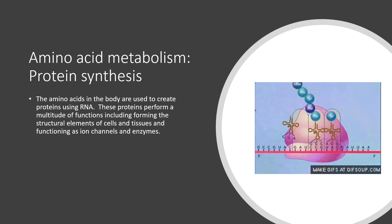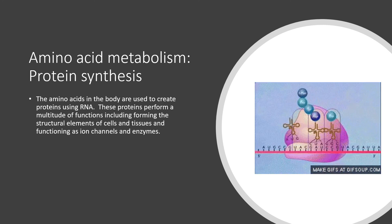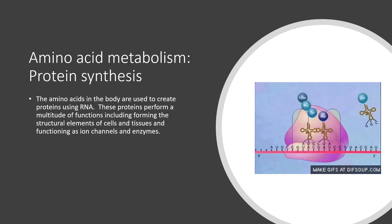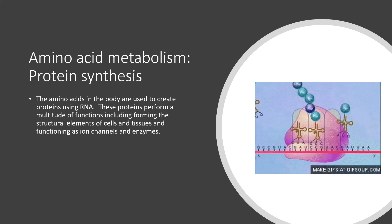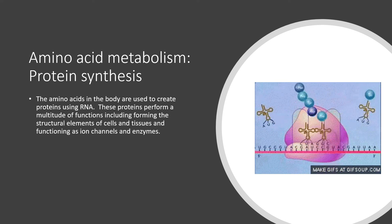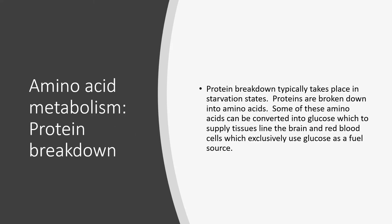The amino acids absorbed into the bloodstream are used to create protein. RNA is used to code for these proteins, which come in different shapes and sizes and perform a multitude of functions, including forming structural elements of cells and tissues and functioning as ion channels and enzymes. These proteins made from amino acids can also be broken down, especially in starvation states. Some amino acids can be converted to glucose, which supplies tissues like the brain and red blood cells that exclusively use glucose as a fuel source. Some proteins can also be converted into energy in other ways as well.